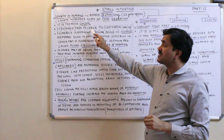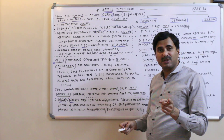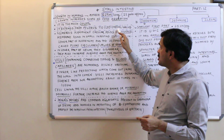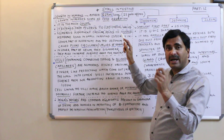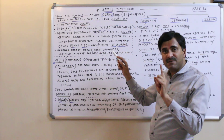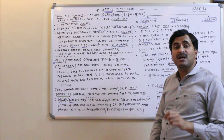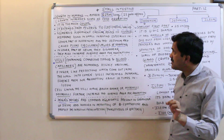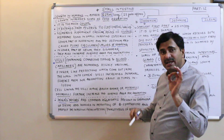The pyloric part of the stomach opens into the first part of the small intestine known as the duodenum. At the junction of the ileum and the cecum — where the ileum is the last part of the small intestine and the cecum is the first part of the large intestine — an ileocecal valve is present. So the small intestine extends from the pylorus to the ileocecal valve.